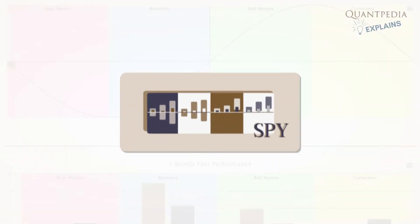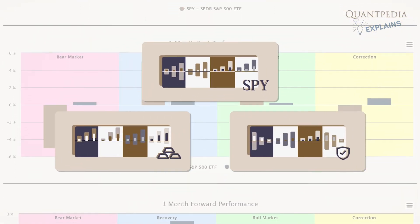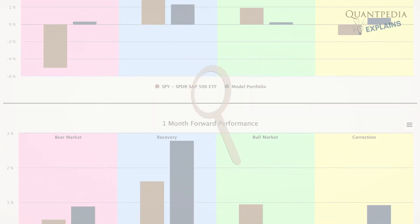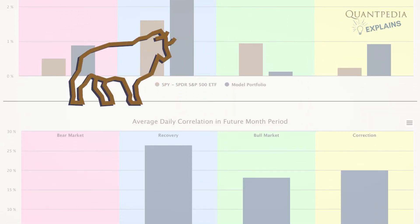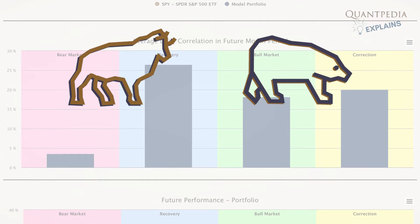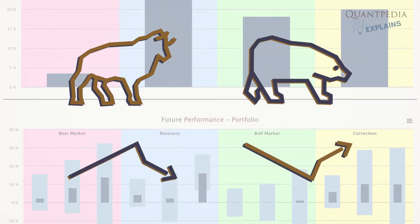Market Phases analysis report was an inspiration for these reports. Therefore, reports analyze the model portfolio's performance during commodity and fixed-income bull markets, bear markets, and two intermediary periods, corrections and recoveries.